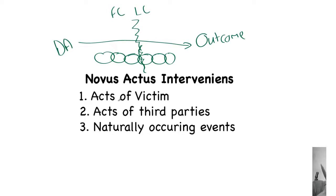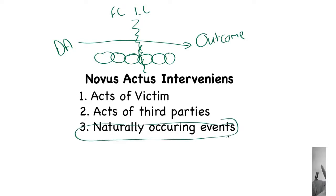Intervening acts fall into three categories: the acts of the victim — things the victim can do that are outside of the control of the defendant; the acts of a third party — somebody other than the defendant or the victim who can do something that intervenes and breaks the chain; or a naturally occurring event. The idea is that either the acts of the victim or a third party can intervene with a completely independent act and thereby break the chain of causation.